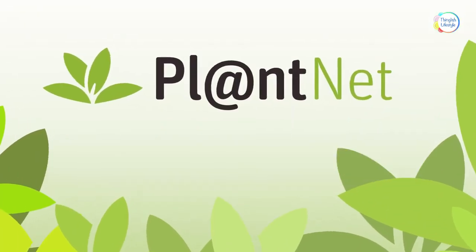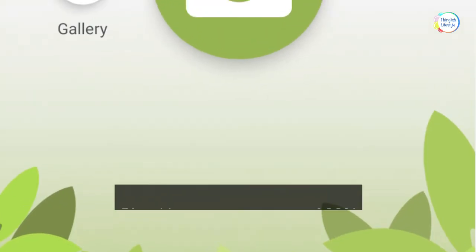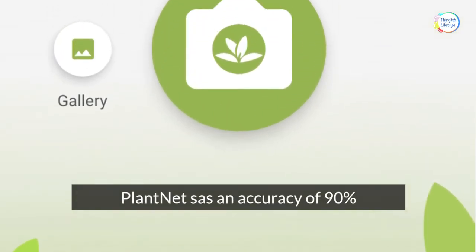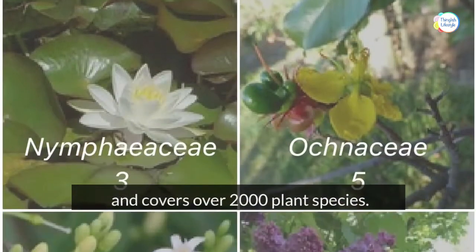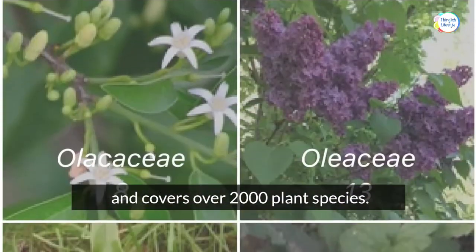Number one: PlantNet. PlantNet boasts an accuracy of 90% and covers over 2,000 plant species.